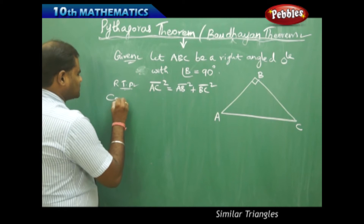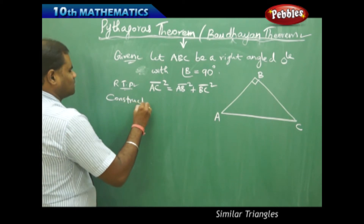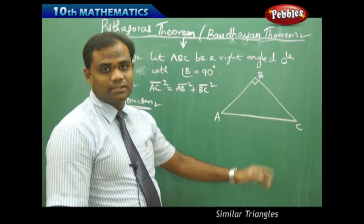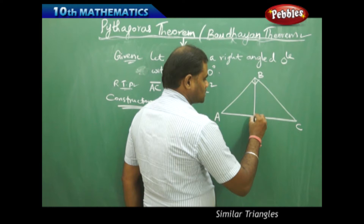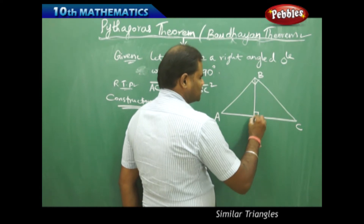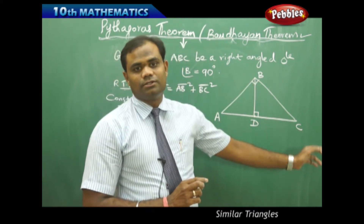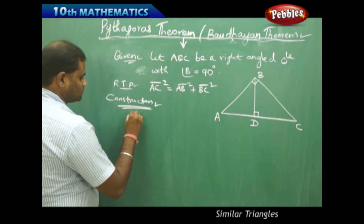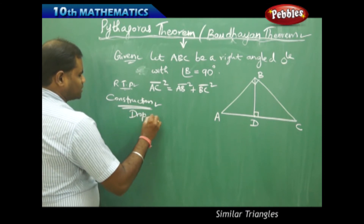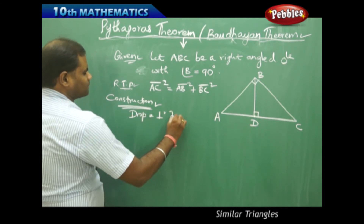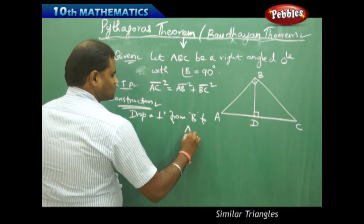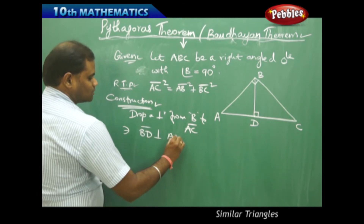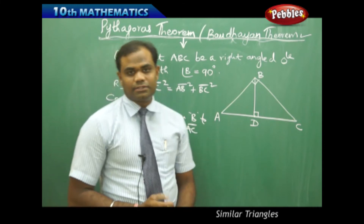Now the construction here is that I drop a perpendicular from B onto AC. When a perpendicular is dropped, I get a point D where BD is perpendicular to AC. Construction: drop a perpendicular from B to AC such that BD is perpendicular to AC, as can be clearly seen in the diagram.